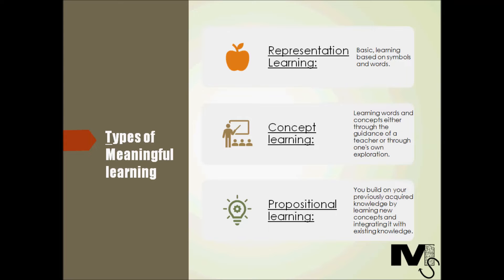Concept learning. This happens as a child's vocabulary expands. This is an intermediate level of learning and includes learning words and concepts either through the guidance of a teacher or through one's own exploration. For example, one can be taught about the difference between odd and even numbers by a teacher or people will eventually figure this out on their own.